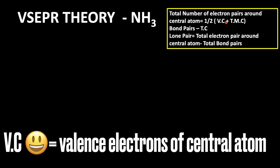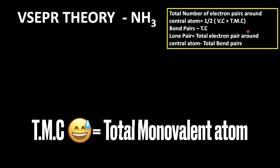In the NH3 molecule, nitrogen is the central atom with 5 valence electrons. Tmc refers to the total number of monovalent atoms attached to the central atom — here, hydrogen is the monovalent atom.